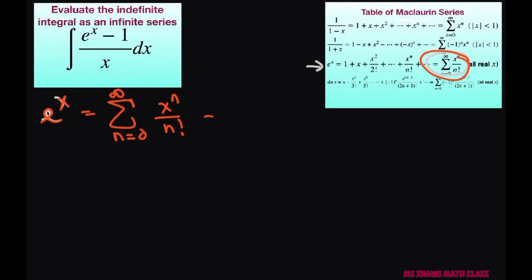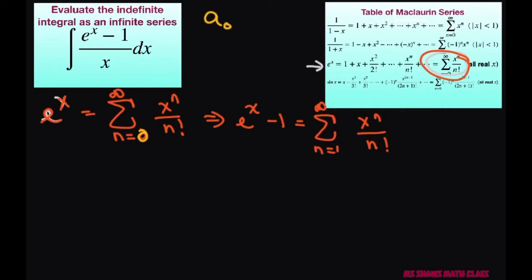Therefore, e to the x power minus 1 equals the sum from n equals 1 to infinity of x to the power of n divided by n factorial. Here's why: if you use n equals 0, a sub 0 equals 1. So if I pull that out, I can write e to the power of x as minus 1 plus 1 and then start with a sub 1, which starts at n equals 1 — those two ones cancel out.